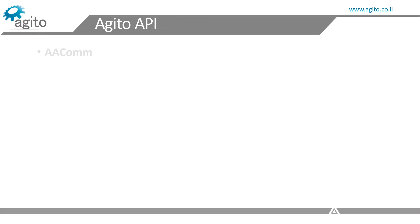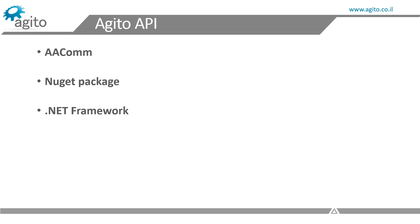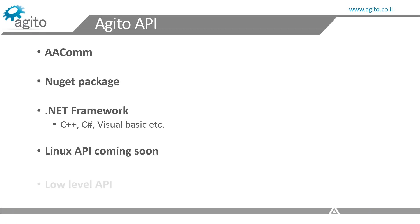Agito's API is called AACOM and can be downloaded as a NuGet package — we'll see how later on. At the moment, Agito has an API that supports all of the programming languages in the .NET framework, which include C++, C Sharp, and Visual Basic, among others. We're also working on an API to support Linux, which is soon to be released. And we'll get to our low-level API in a later video.